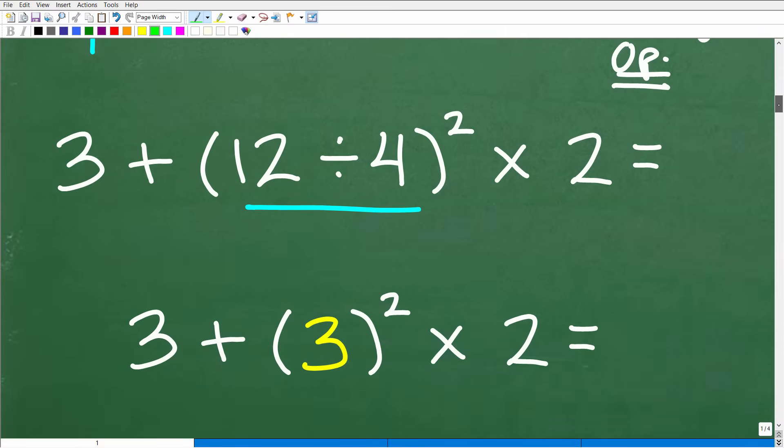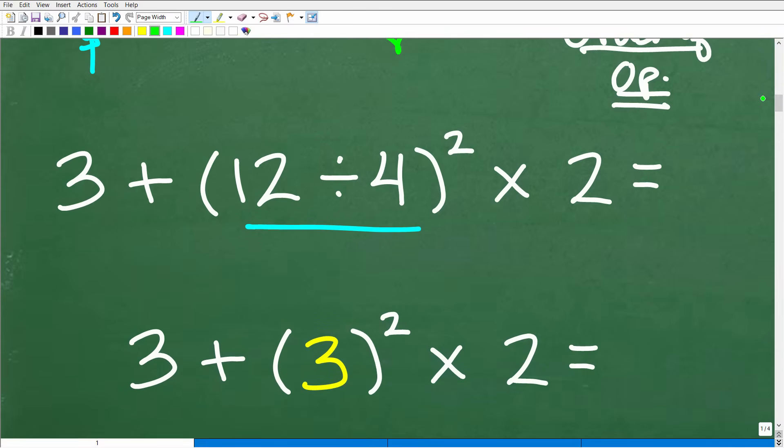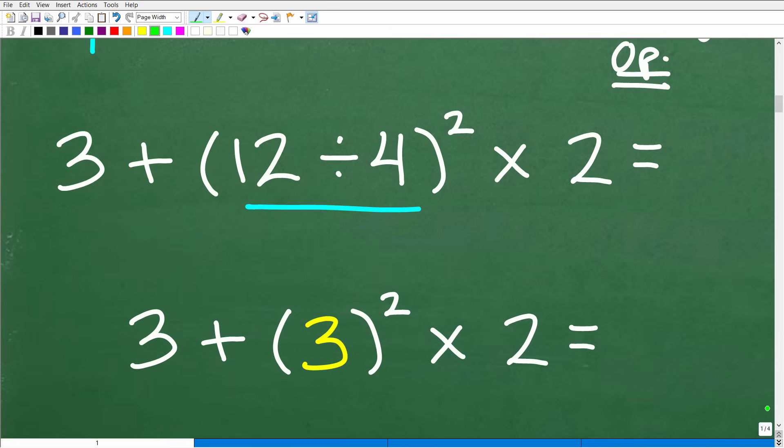Okay, so let's just take this one step at a time, and that's really the key to math, is writing each step so your teacher can see, and you can verify and see that, hey, you're doing this problem in the correct order. Okay, so 12 divided by 4, excuse me, is 3. So now the problem is 3 plus 3 squared times 2. Don't take two steps or three steps in one, just one step at a time.